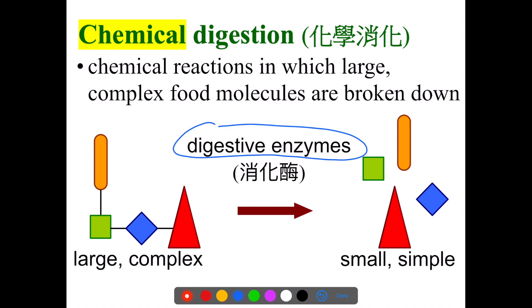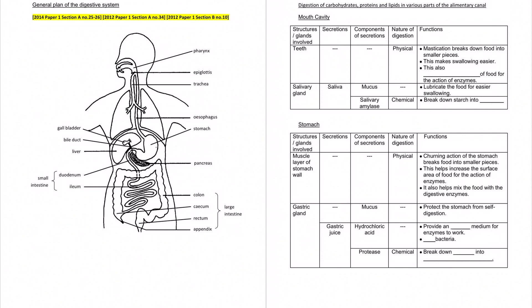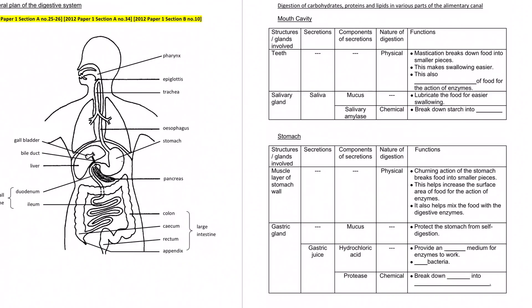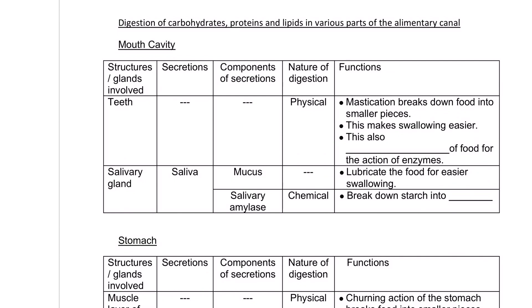Now let us have a closer look at the digestive processes that take place in our alimentary canal, starting from page 8 of your notes. We'll start with digestion in the mouth cavity. The presence of teeth helps digest food physically by means of mastication, or simply chewing. By chewing food, the ingested food is made smaller, which also increases the surface area for the action of digestive enzymes.